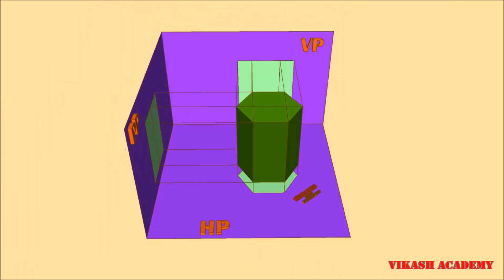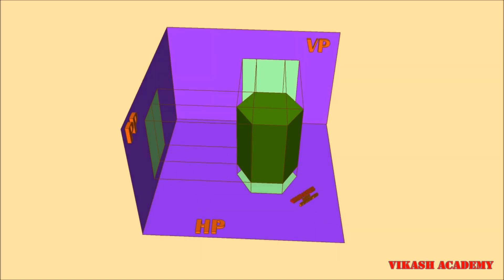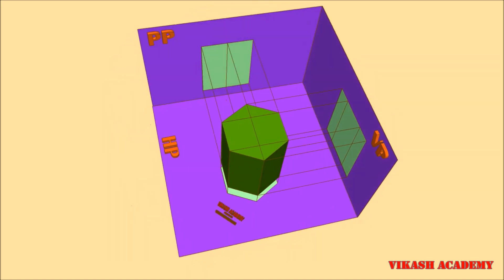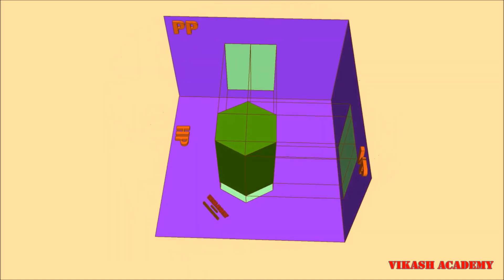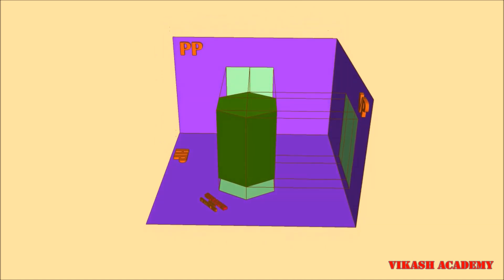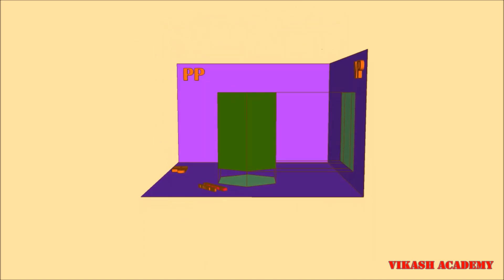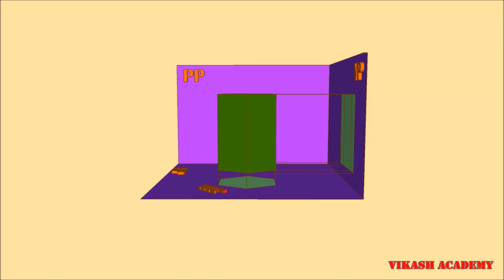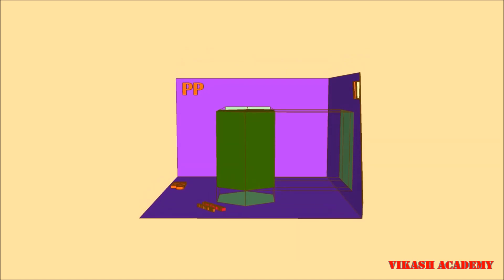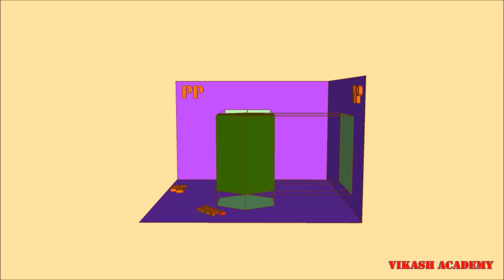Finally, when we observe this object from the right hand side, we are going to obtain a rectangle on the profile plane — not only a rectangle, but also some lines on that rectangle which will show the visible faces of this hexagonal prism.